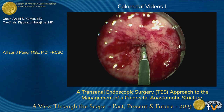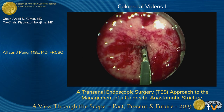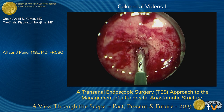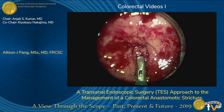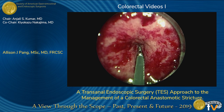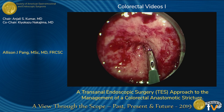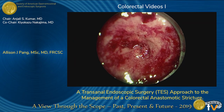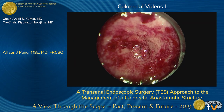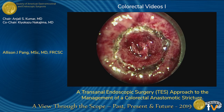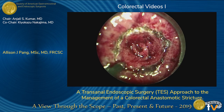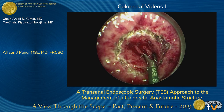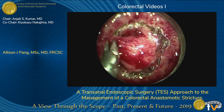We first set up the TEO platform using the long operating proctoscope. Here, where the instrument is pointing, is the stricture — you can tell it's very tight and it's at the level of the anastomosis. To begin, we used electrocautery to mark out our circumferential resection margin, making sure we had a good margin, which we did.